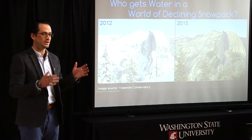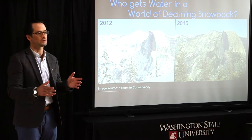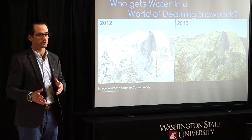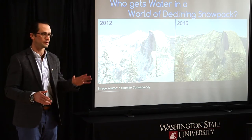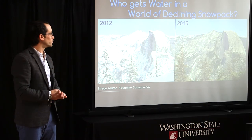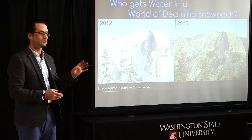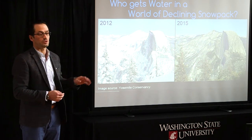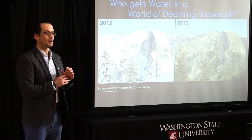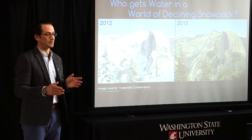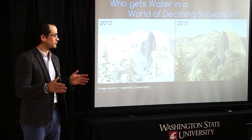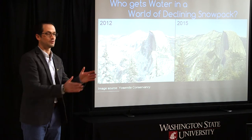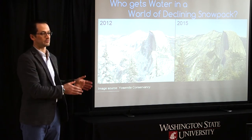This change in snowpack results in changes in water supply that affect our water use for all the different users. Researchers at WSU have estimated that the change in snowpack due to temperature by 2050 will be a 20 to 50 percent decline in the amount of snowpack accumulated, and it will be shifted a full month earlier in the season.